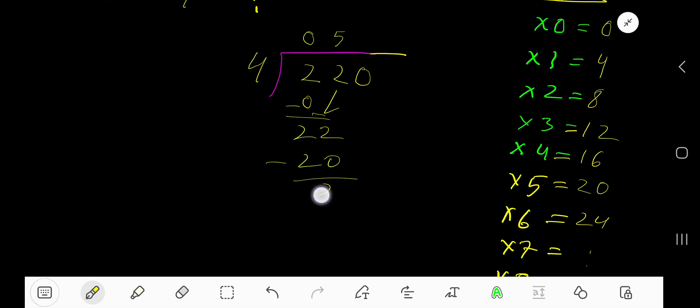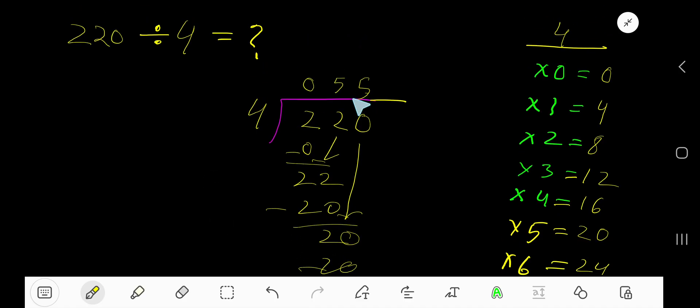Subtract, you get 2. Bring down the next digit; now you have 20. 4 goes into 20 how many times? 5 times. 5 times 4 is 20, subtract to get 0. So 55 is your answer.